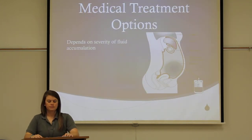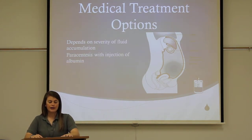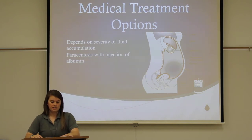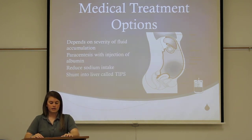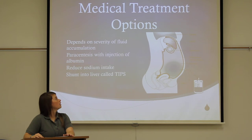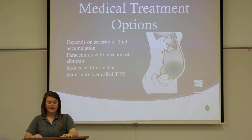Medical treatment options depend on the severity of the fluid accumulation in the abdomen. Paracentesis can be done with the injection of albumin to reduce further accumulation. Patients can also reduce their sodium intake, specifically salt, to 2,000 mg daily. Additionally, a shunt called TIPS can be put into their liver, and lastly, a liver transplant may be done.